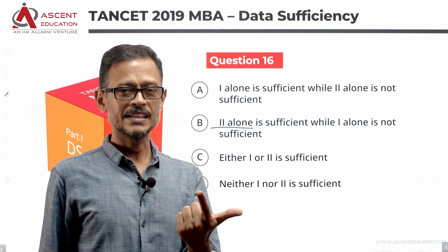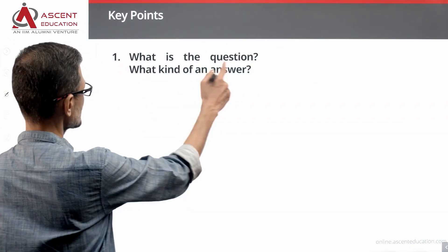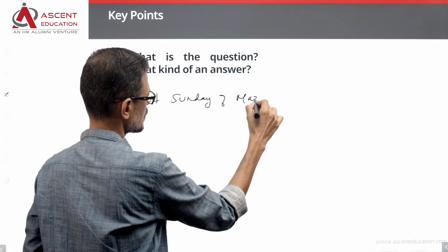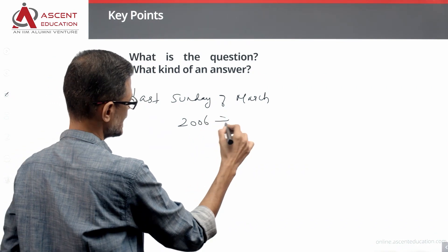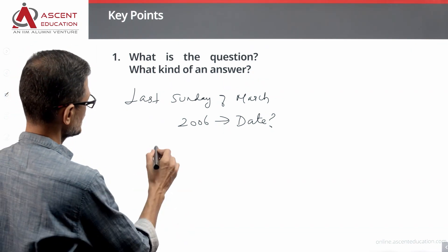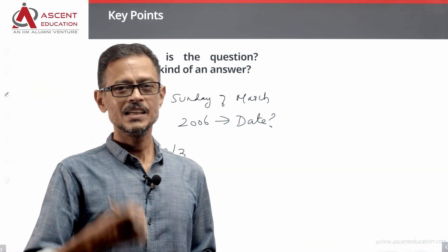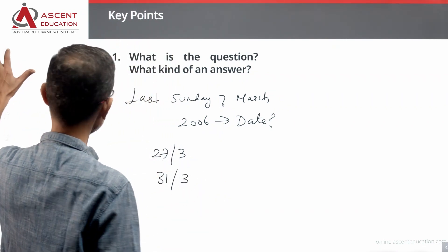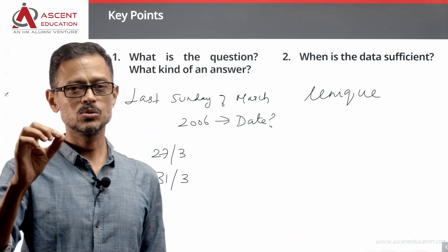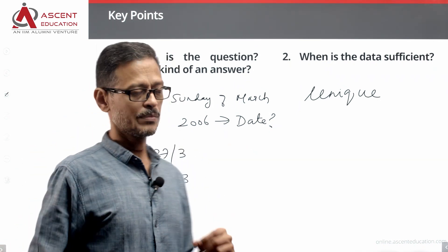Let's take a look at the question again and figure out what kind of answer it requires. When is the data sufficient? The data is sufficient when we get a unique value. The question is: what is the last Sunday of March 2006? The answer is sufficient when we arrive at a unique date. With this in mind, let's take a look at the statements.